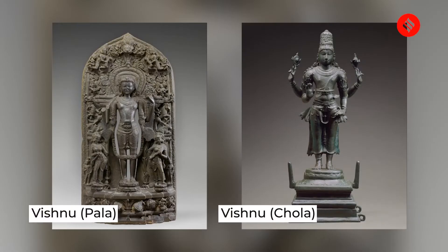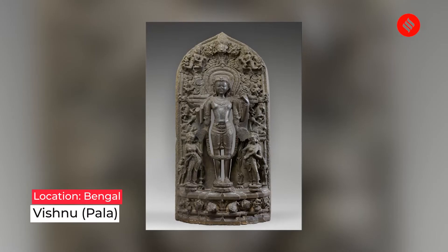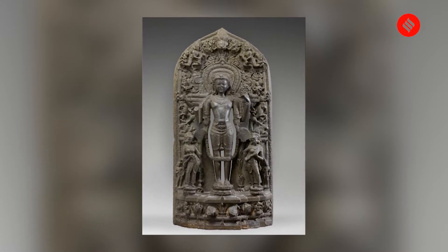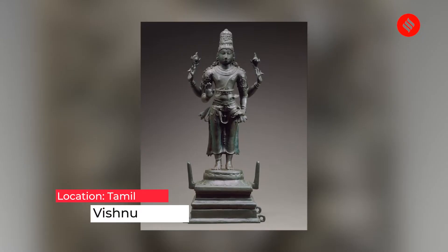I can show two more images of Vishnu standing up — both from India. One is from the Pala period, around the 8th–9th century, about 1100 years ago, from Bengal. The other is Chola, about 10th century, a thousand years ago, from Tamil Nadu. Both are bronze. The moment I apply a history lens and a geography lens, they become different. That is step one in how to study art.